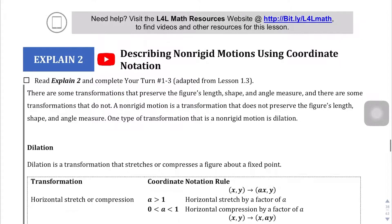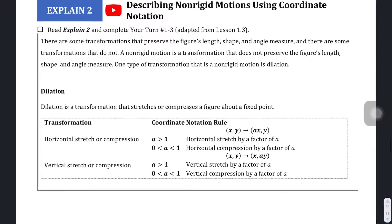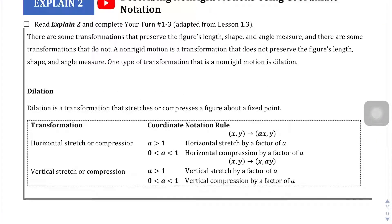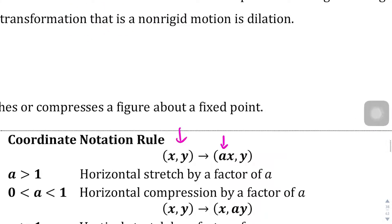The only real difference is that rigid motions maintained a figure's shape, size, length, and internal angle measures. Non-rigid motions don't do that — they'll change the shape, change the size, make it bigger or taller. The big rule of thumb is that with a non-rigid motion, you're basically going to be multiplying the x or the y value by a set value — in this case 'a' — that's either greater or less than 1, not equal to 1.